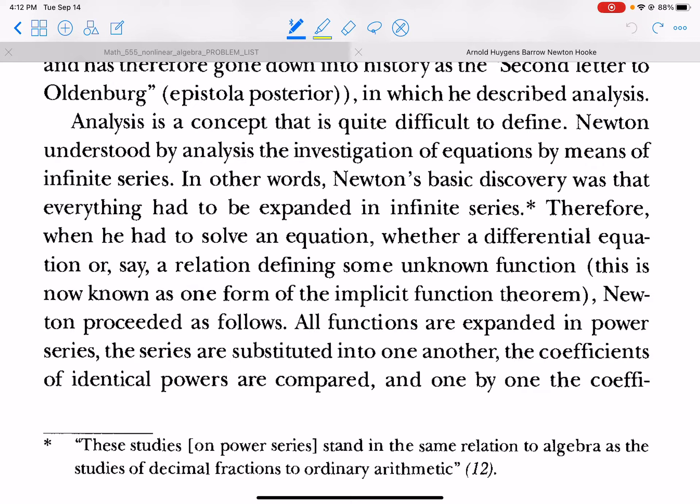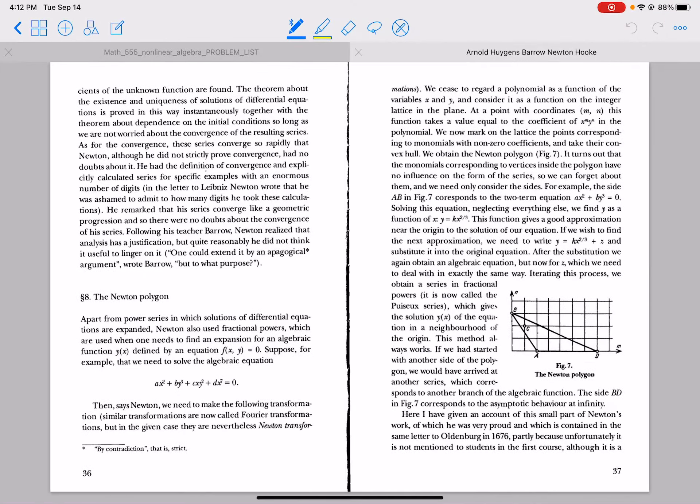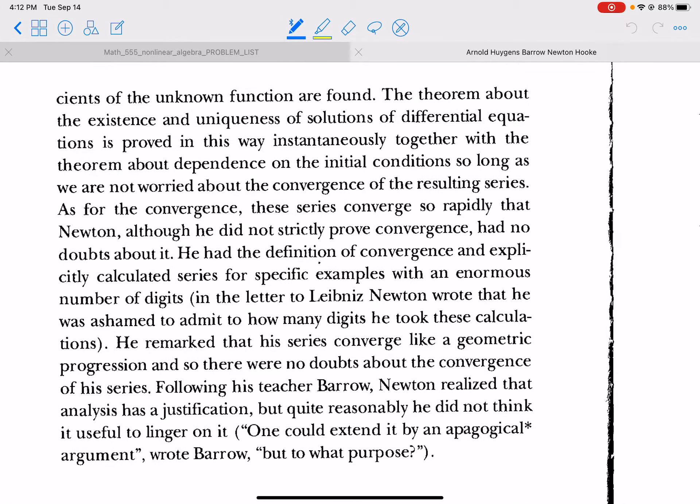Therefore, when he had to solve an equation, whether a differential equation or a relation defining some unknown function, this is now known as the implicit function theorem, Newton proceeded as follows: all functions are expanded in power series, the series are substituted into one another, the coefficients of identical powers are compared, and one by one the coefficients of the unknown function are found, the coefficients of its power series expansion. The theorem about the existence and uniqueness of solutions of differential equations is proved in this way instantaneously together with the theorem about dependence on the initial conditions, so long as we're not worried about convergence of the resulting series. As for convergence, these series converge so rapidly that Newton, although he did not strictly prove convergence, had no doubts about it.